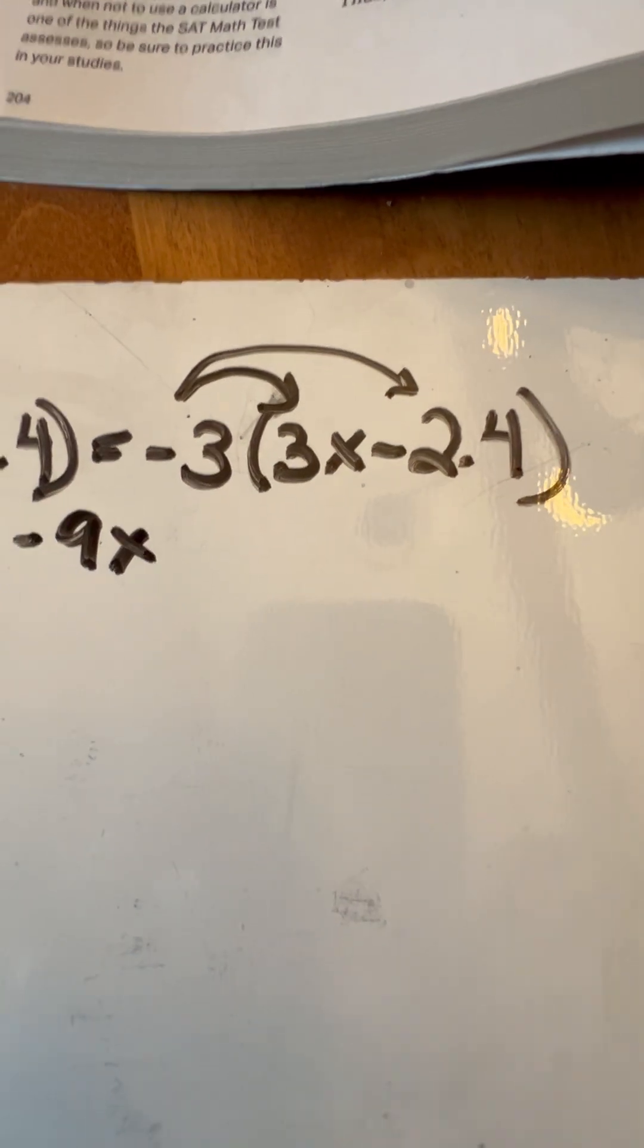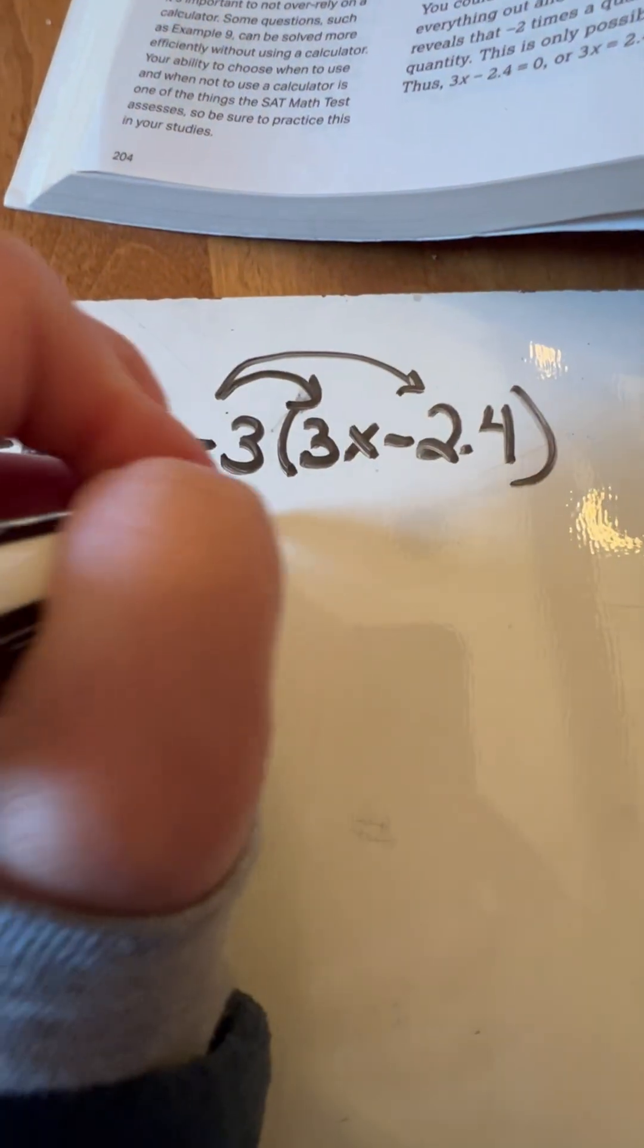So we're just going to times that by 3 this time. Again, it's a negative times a negative, so we're going to get 7.2 here on this one.